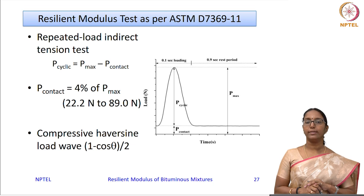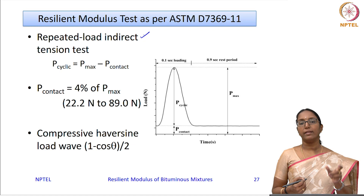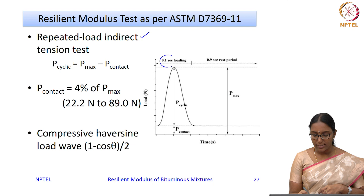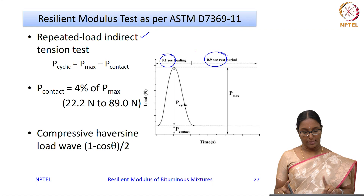The test cycle is the same wherein you apply a repeated load indirect tension test, but the load duration and frequency are fixed. The load is applied for 0.1 seconds and the rest period is 0.9 seconds, making a total cycle length of 1 second, or 1 hertz frequency.